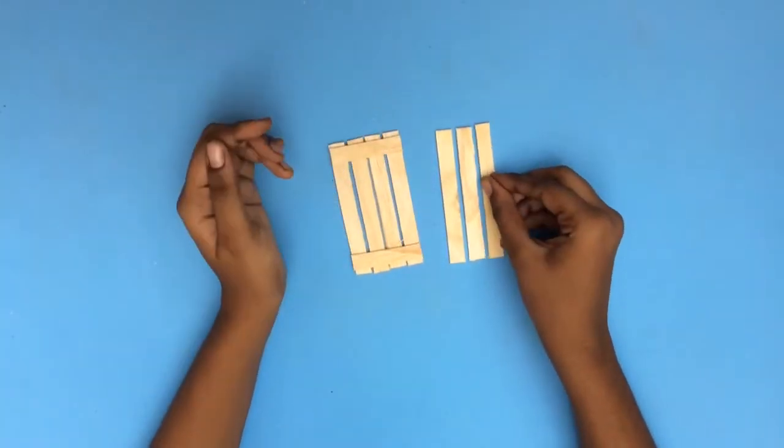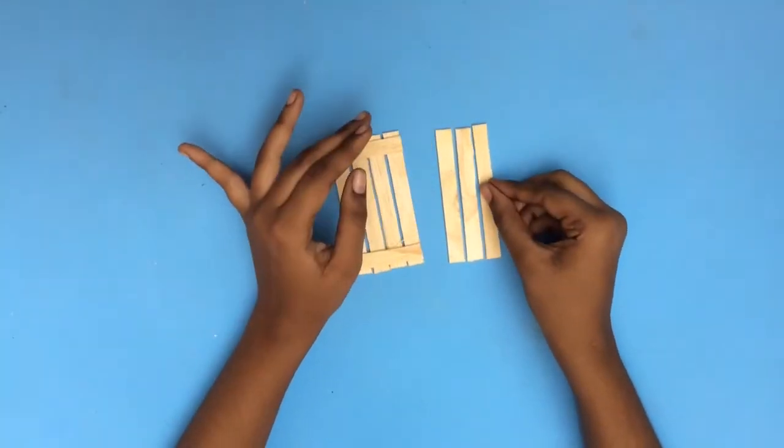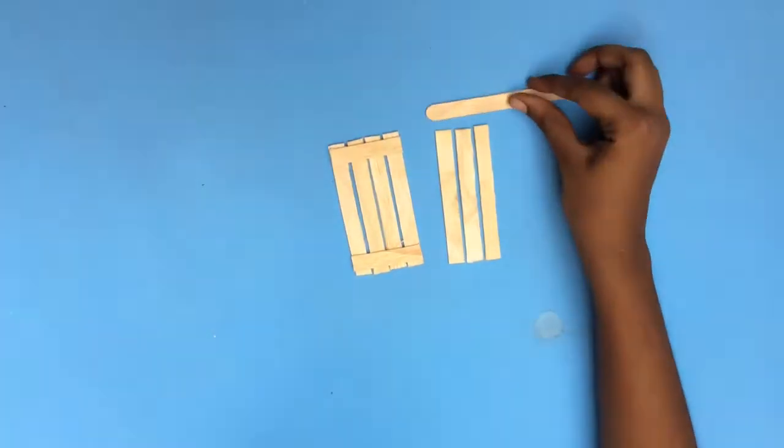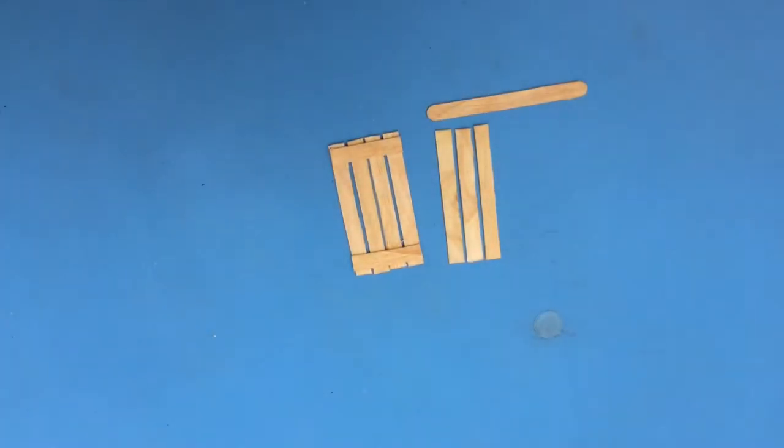Take three more sticks and repeat the same process to make the side of the case. Also note that you need to make two of these.